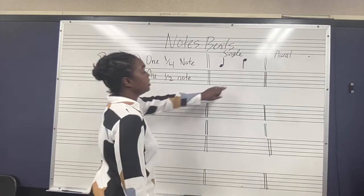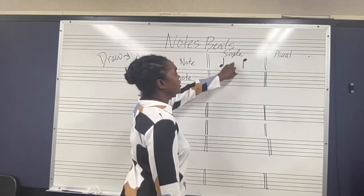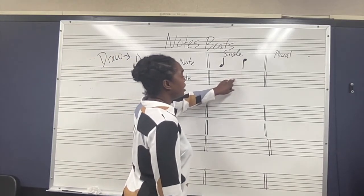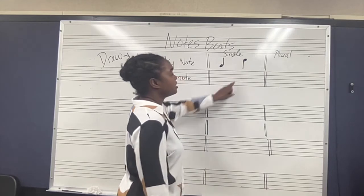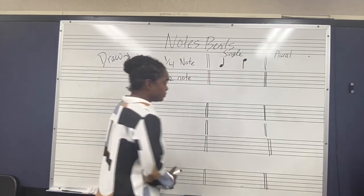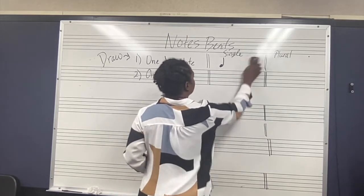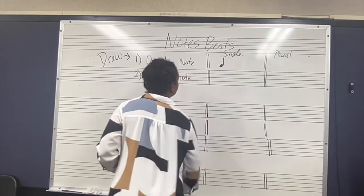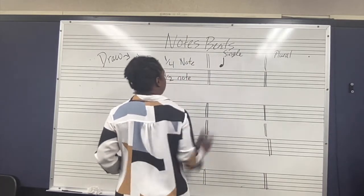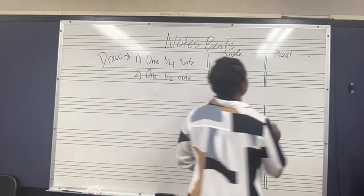And again, that middle line on the staff — the middle line here determines if that stem is going to go up or down. So I'm just going to keep one single note there so you really understand what that looks like.